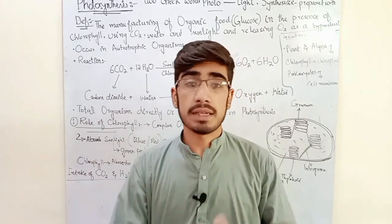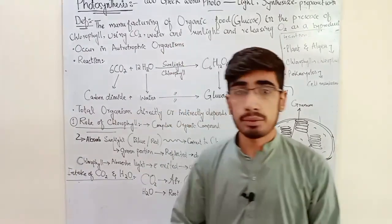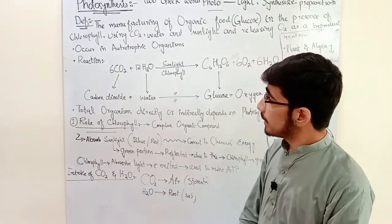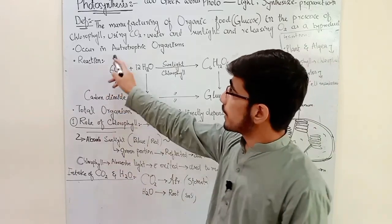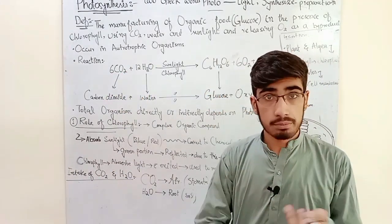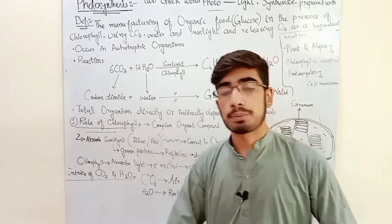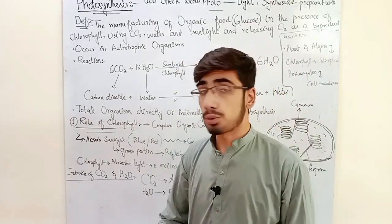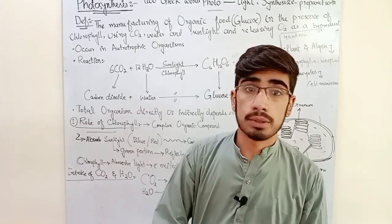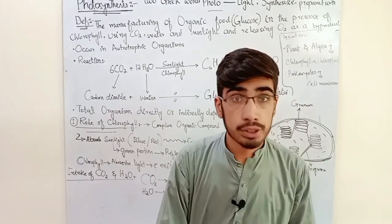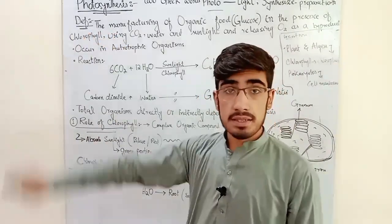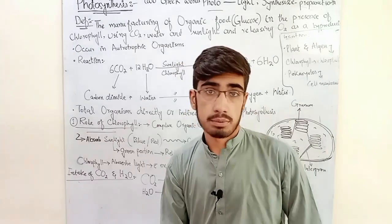The components required are sunlight, carbon dioxide, and water. If you have an autotrophic organism — as discussed in chapter 1 and chapter 4 — you can see the distinction between autotrophs and heterotrophs. Autotrophs are very important.